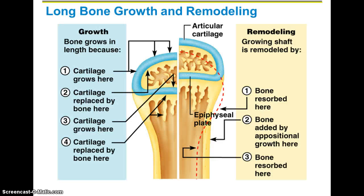Long bone growth versus bone remodeling are two different things. Long bone growth is where the bone grows in length. Bone remodeling is where bone is reabsorbed and added by appositional growth — meaning side to side, replacing itself from the inside out, like tree rings. Bone remodeling uses remodeling units — osteoblasts and osteoclasts side by side, depositing and reabsorbing bone — maintaining bone health as bones are constantly exposed to different mechanical stresses throughout life.